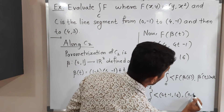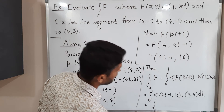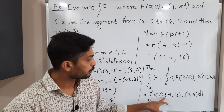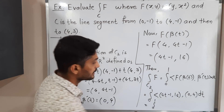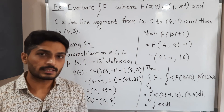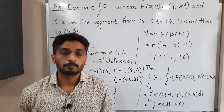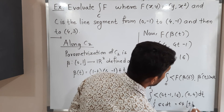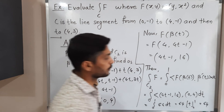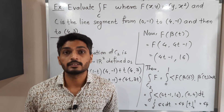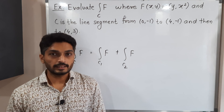The integral of f over C2 equals the integral from 0 to 1 of the inner product of f(beta(t)) = (4t - 1, 16) and beta'(t) = (0, 4) dt. This gives: (4t - 1)(0) + (16)(4) = 0 + 64 = 64. Since 64 is a constant, the integral equals 64 times [t] from 0 to 1, giving a final value of 64.